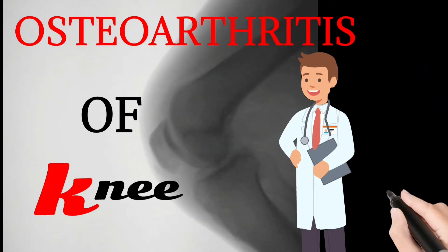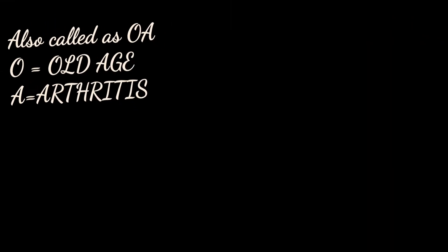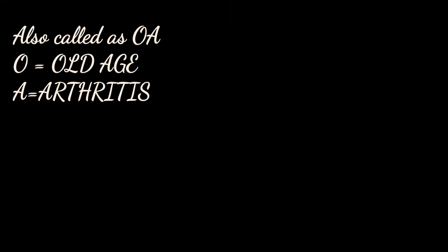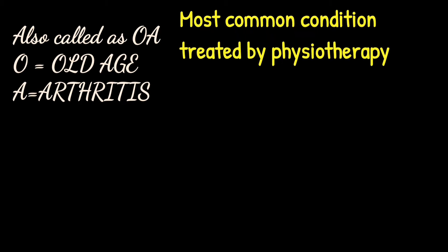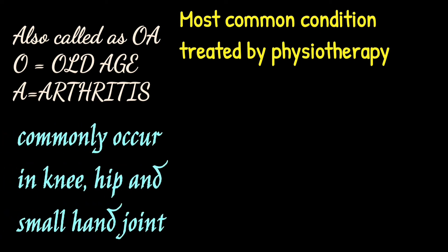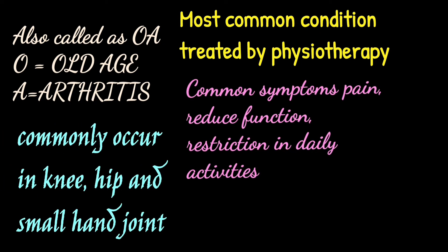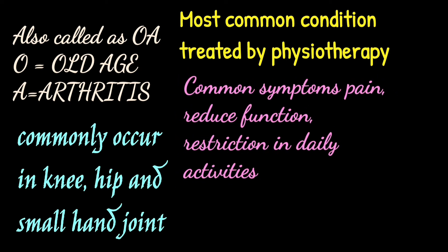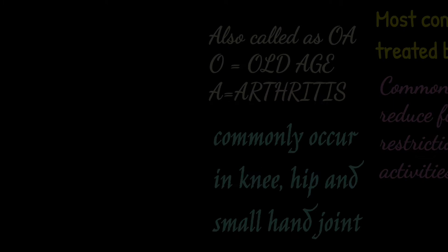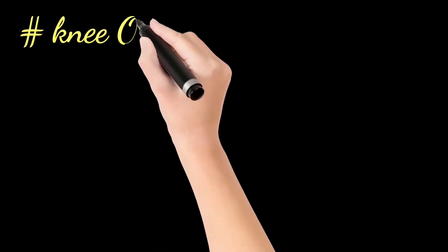So let's begin. Osteoarthritis of the knee — OA — it's an old age arthritis and it is the most common condition treated by physiotherapy. It commonly occurs around the knee joint, hip joint, and the small joints of the hand as well.